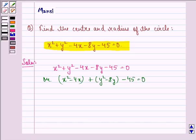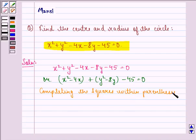Now completing the squares within the parenthesis, we can write x square minus 4x plus 4 plus y square minus 8y plus 16.